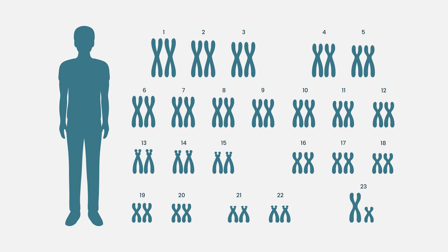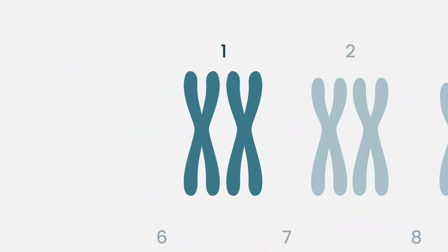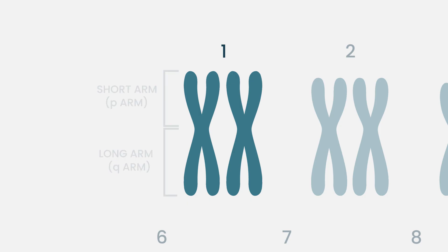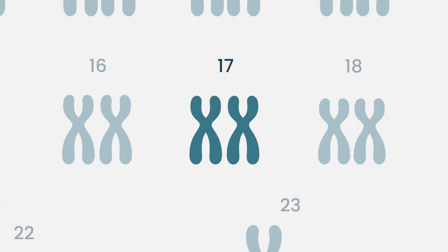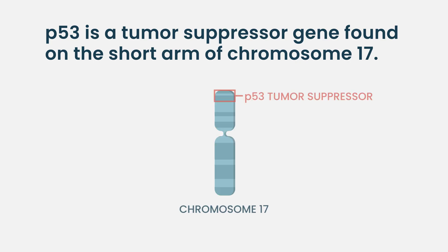One of the major high-risk markers is the 17p deletion. We all have 23 pairs of chromosomes, and each chromosome has a long arm (q) and a short arm (p). A 17p deletion means some of the information on the short arm of chromosome 17 is missing — and that's where p53, a major tumor suppressor gene, lives. If you're missing that region, your myeloma tends to behave in a more high-risk nature.